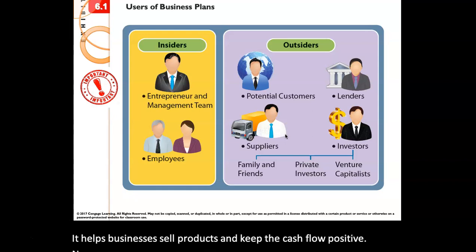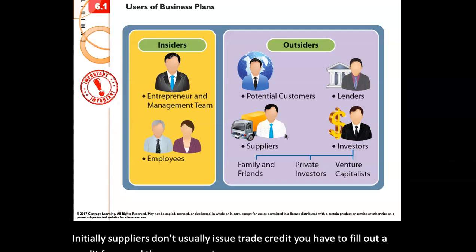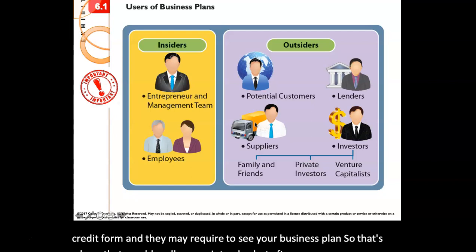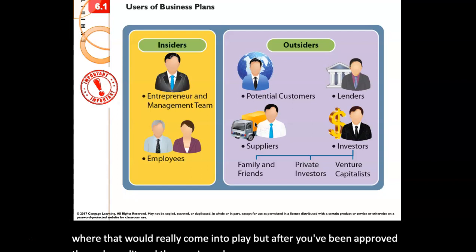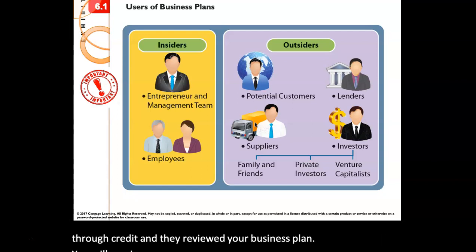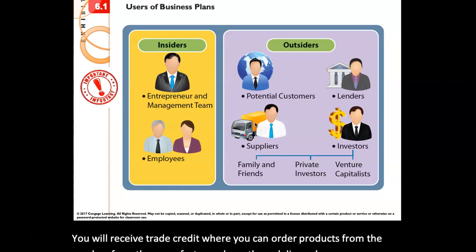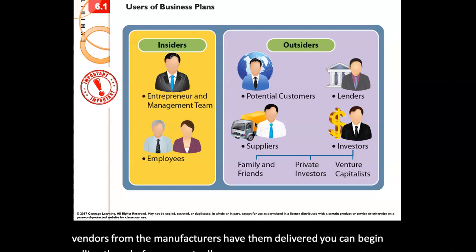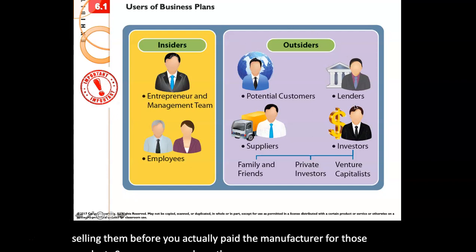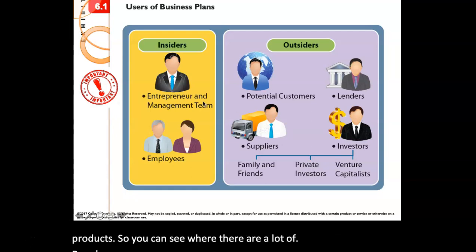Initially, suppliers don't usually issue trade credit. You have to fill out a credit form and they may require to see your business plan. After you've been approved through credit and they've reviewed your business plan, you will receive trade credit where you can order products from the vendors or manufacturers, have them delivered, and begin selling them before you've actually paid the manufacturer. So you can see there are a lot of people and organizations that use a business plan.